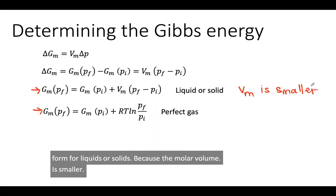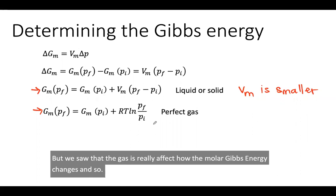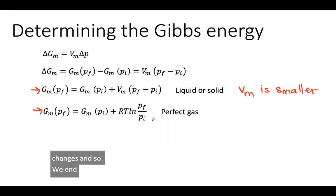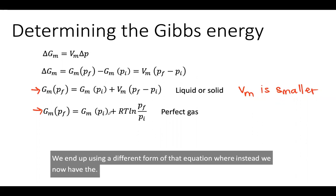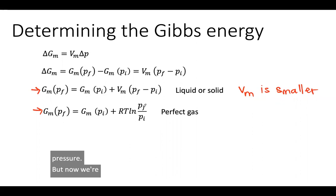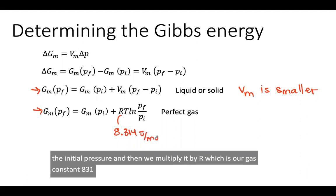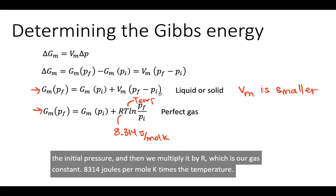But we saw that the gases really affect how the molar Gibbs energy changes. We end up using a different form of that equation, where we still start with the molar Gibbs energy at the initial pressure, but now we're taking the natural log of the final pressure divided by the initial pressure. Then we multiply it by R, which is our gas constant, 8.314 joules per mole, times the temperature in Kelvin.